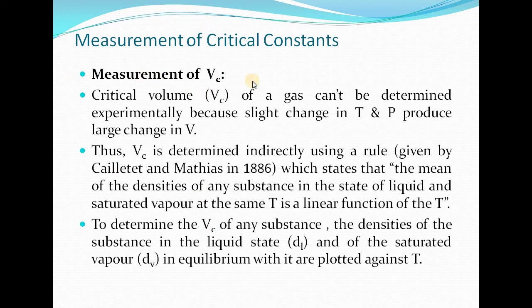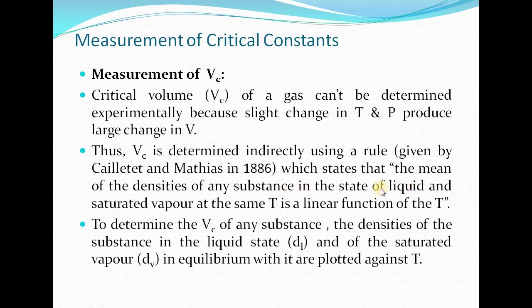Next is the measurement of critical volume. Critical volume cannot be directly determined experimentally, because a slight change in temperature and pressure produces a large change in volume. To solve this problem, the critical volume is determined indirectly using a rule given by Cailletet and Matthias in 1886. According to that rule, the mean of densities of any substance in the state of liquid and saturated vapour at the same temperature is a linear function of temperature.